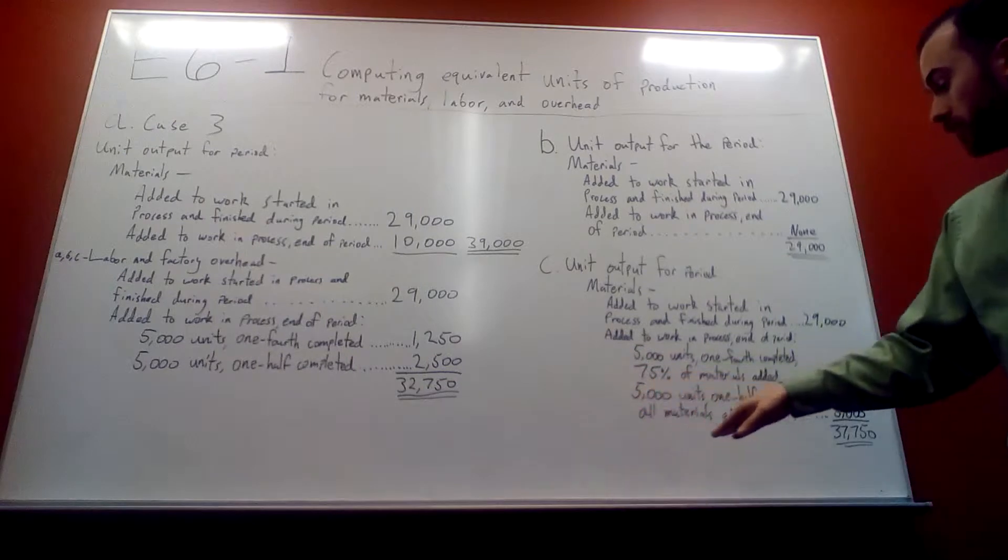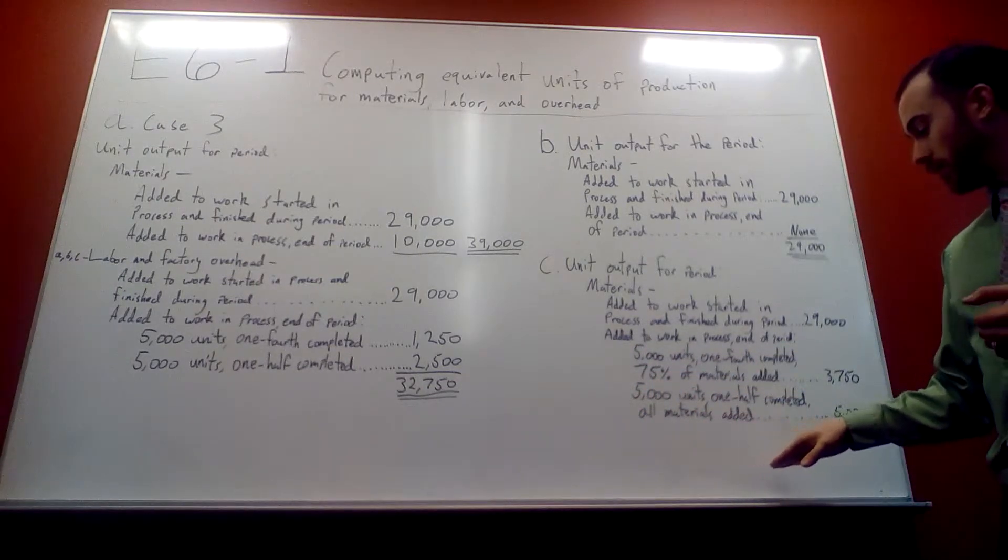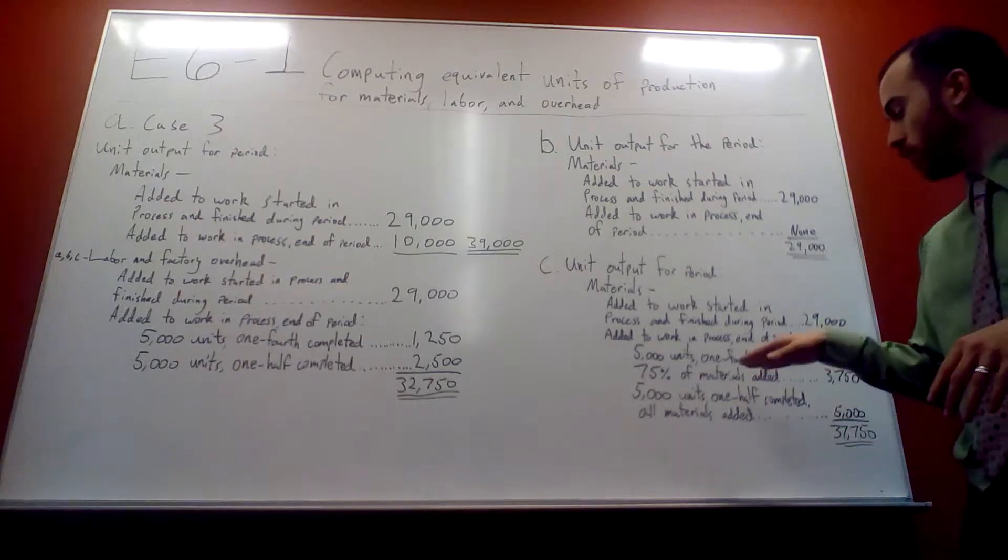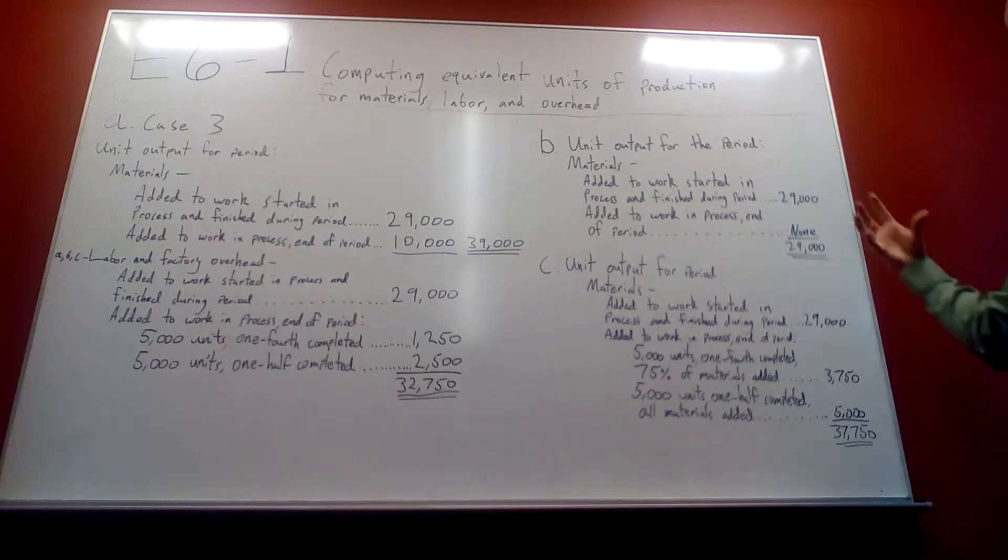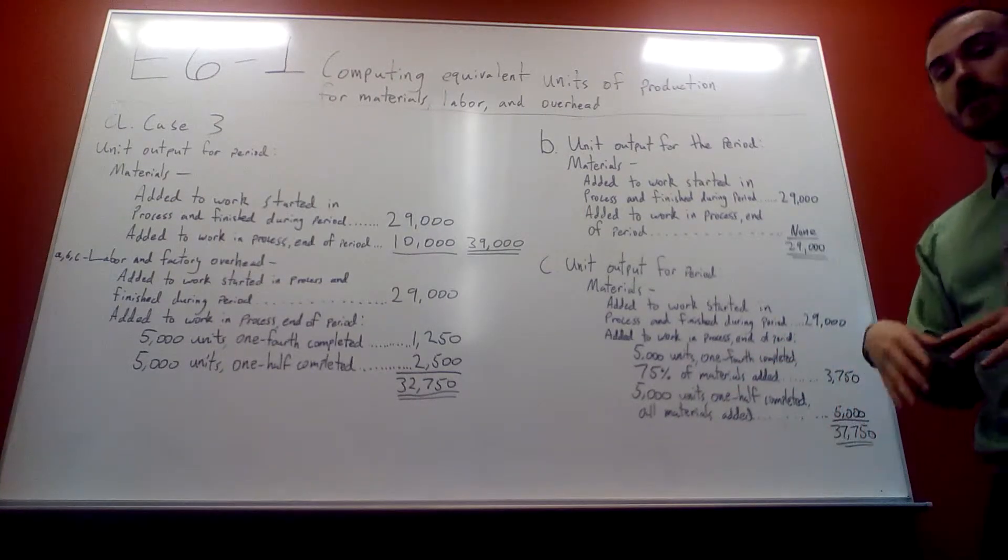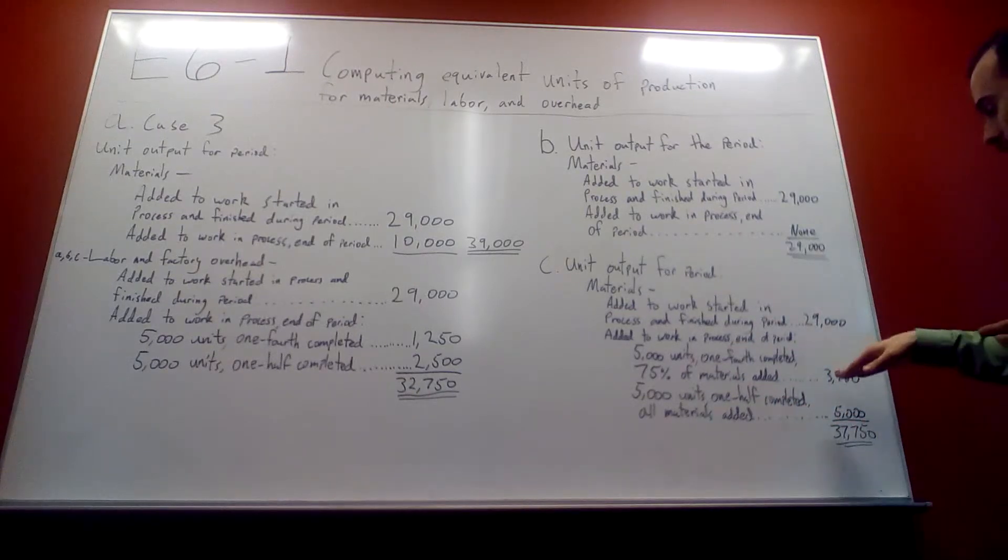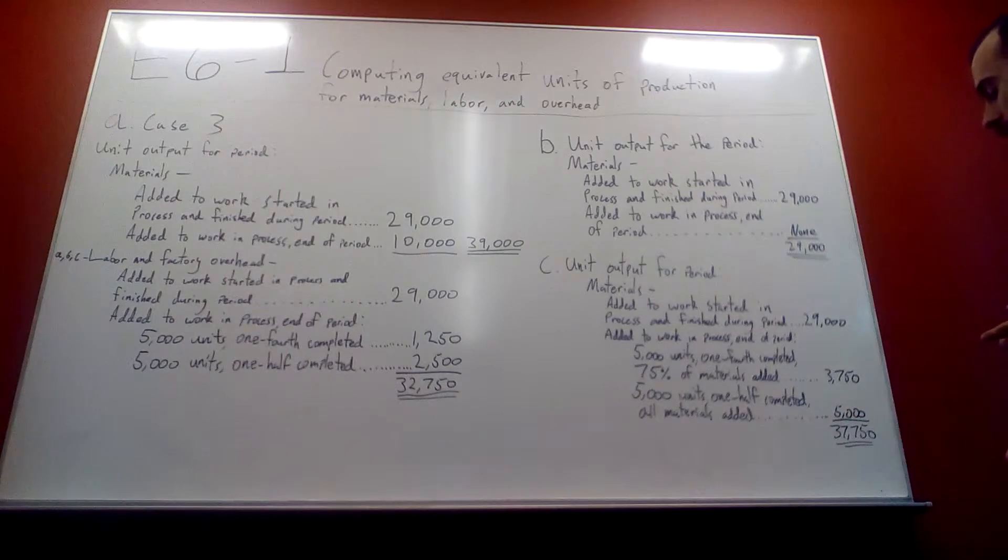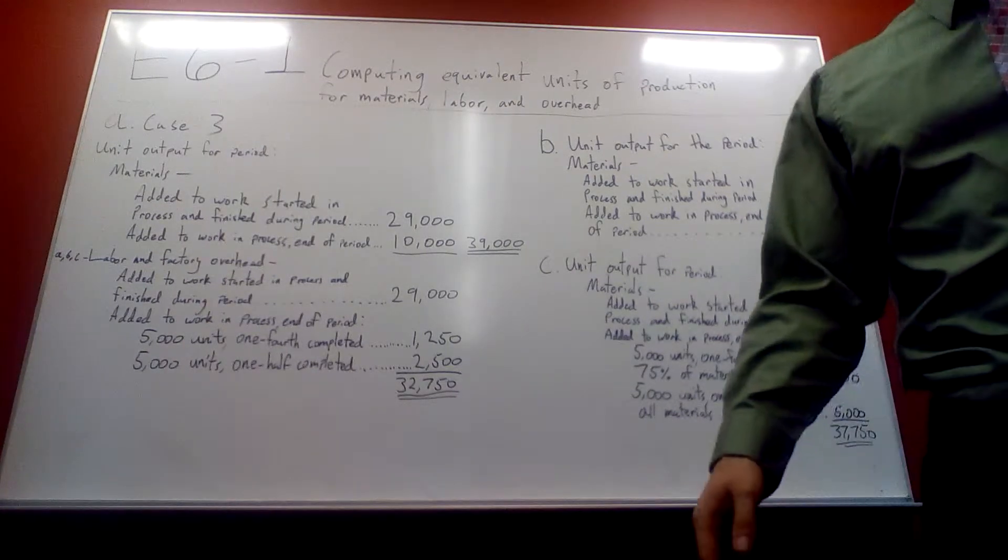Now, the other 5,000 are one half completed. So all materials are added. So you're going to put the full amount, because as soon as they hit that one half, you add the other 25% of materials into production, you get to use all of them. So it's the 29,000 plus the 3,750 plus the 5,000 equals 37,750.